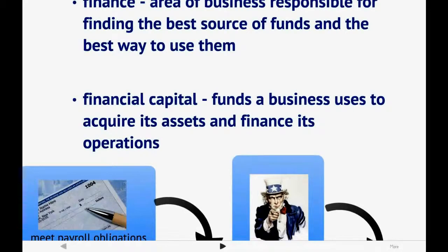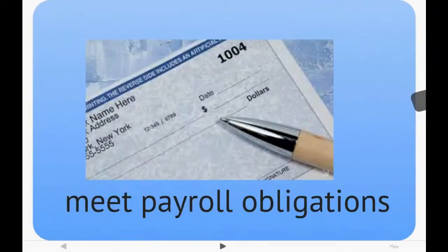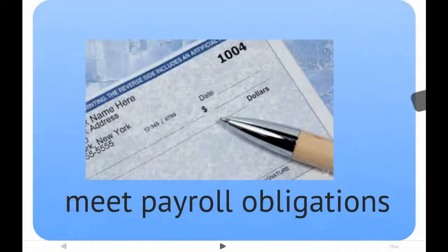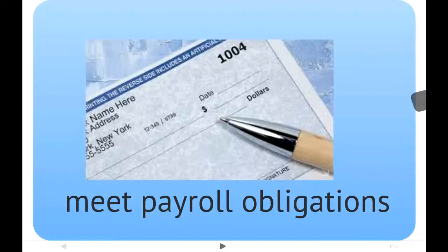One of the things that companies need of course is financial capital — essentially just money or dollars. These are the funds that a business uses to acquire different assets and to finance its operations. One example is payroll obligations. Companies obviously need to meet payroll obligations by paying employees for the hours they've worked. Labor in many businesses is the greatest expense, and you need to have the capital necessary to meet those obligations and have cash available to actually pay them in a timely manner.